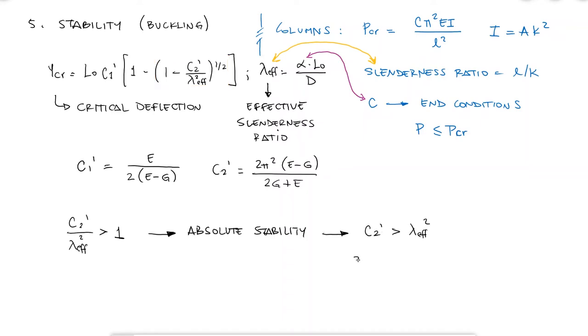If C2' is greater than lambda squared, we can solve for the free length to obtain an expression that would restrict its maximum value, and for steels, which is a pretty common material for springs, we can substitute the values for the elastic and the shear modulus E and G.